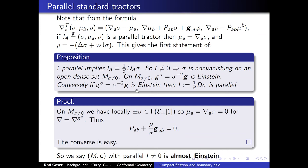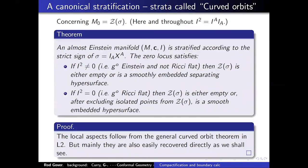This gives us a way of generalizing the notion of Einstein: a conformal structure with a parallel tractor is called almost Einstein, because on an open dense set it is Einstein. The sigma tells us smoothly how you're taking that notion to where it is zero — the scale tractor tracks this.